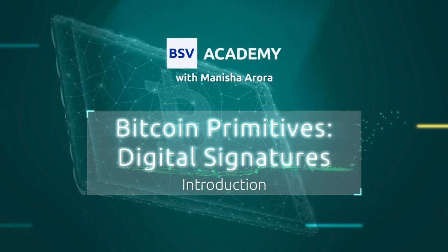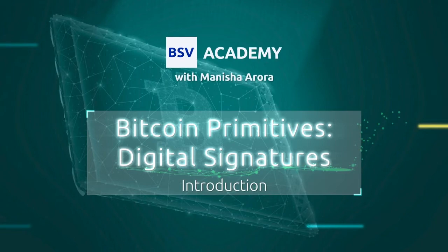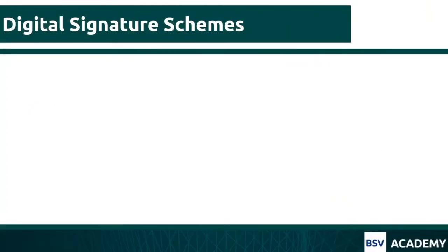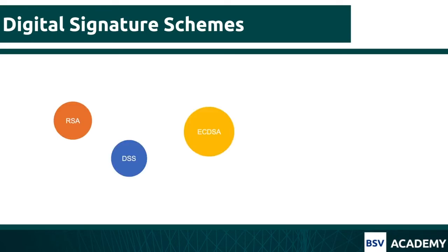It is one of the fundamental concepts which, if well understood, will enhance your overall understanding of Bitcoin. As this is a beginner level course, it assumes no prior knowledge of Bitcoin. There are many well-proven digital signature schemes which enterprises use, such as RSA, which is based upon the name of its inventors, Digital Standard Signature, ECDSA, which stands for Elliptic Curve Digital Signature Algorithm, and a few more. For the scope of this course, our focus would only be ECDSA.